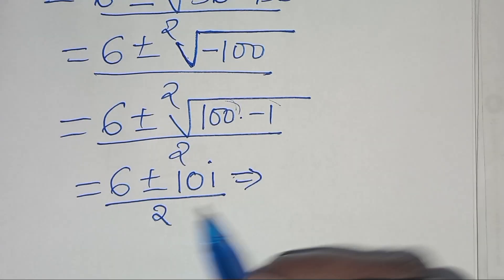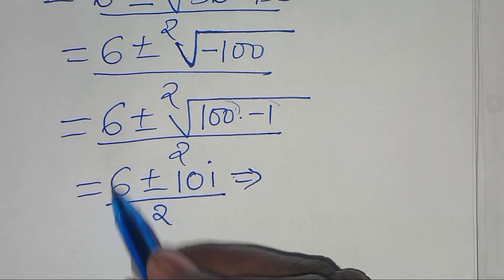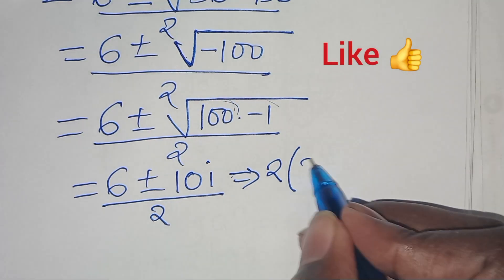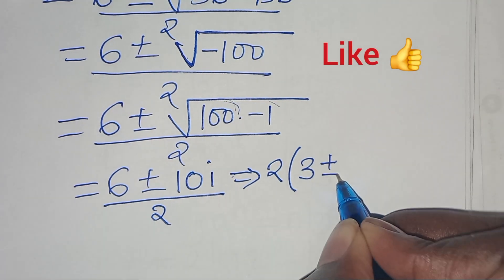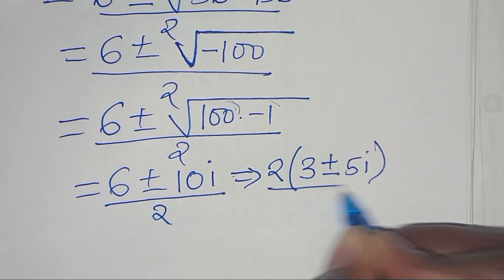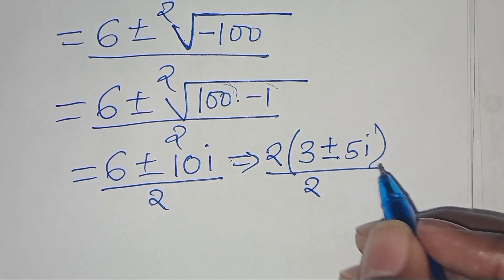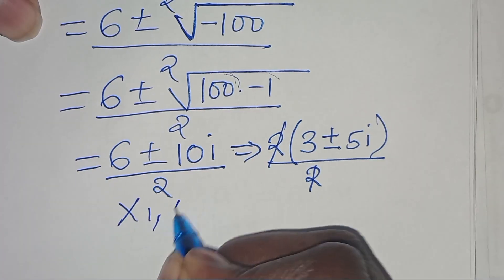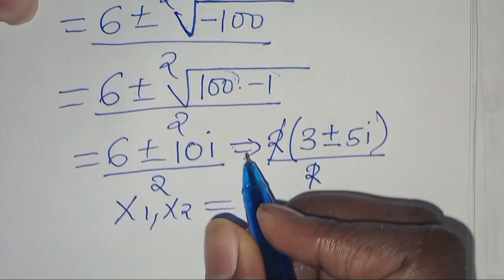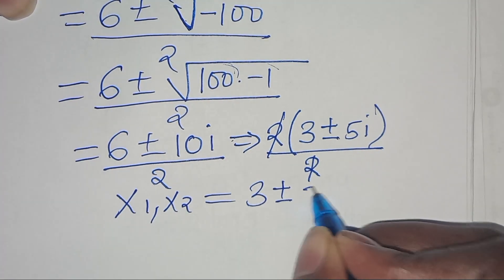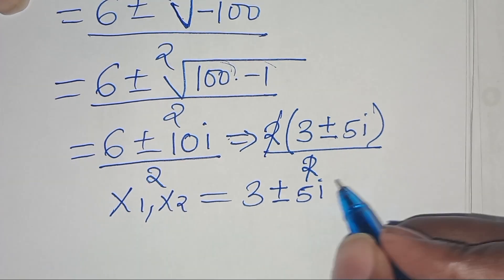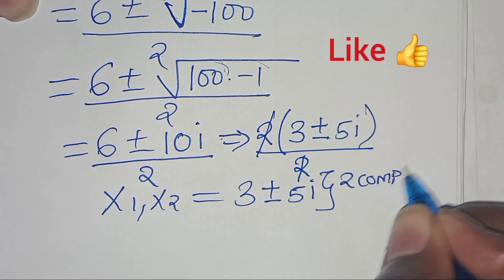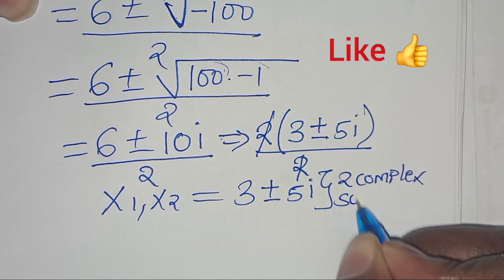We can factor out 2, so that we have 2 times the quantity 3 plus or minus 5i, divided by 2. Simplifying, this implies that x1 and x2 are equal to 3 plus or minus 5i. So from case 1, we have 2 complex solutions.